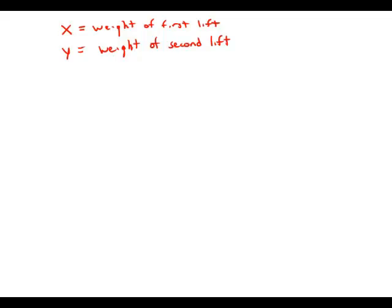In a weightlifting competition, the total of Joe's two lifts was 750 pounds. If twice the weight of his first lift was 300 pounds more than the weight of his second lift, what was the weight in pounds of his first lift?